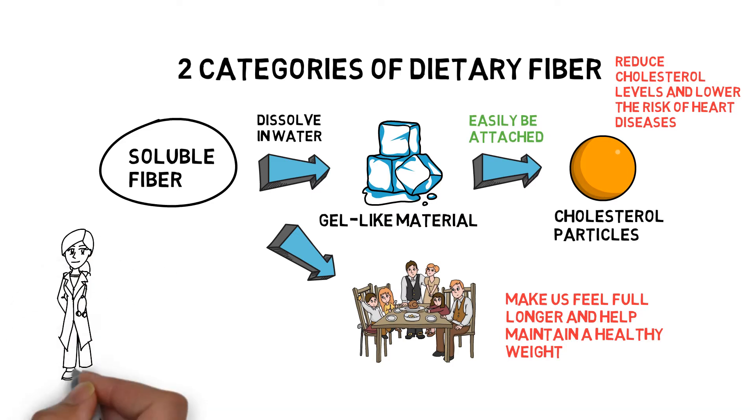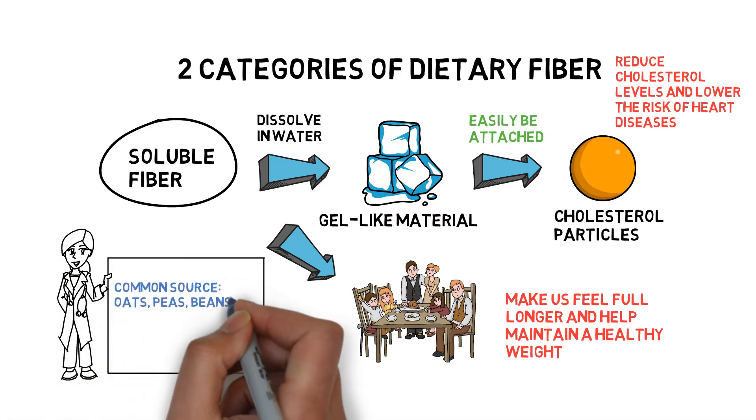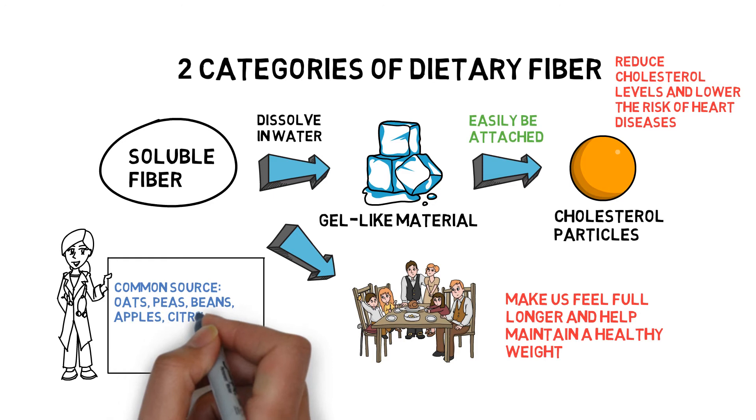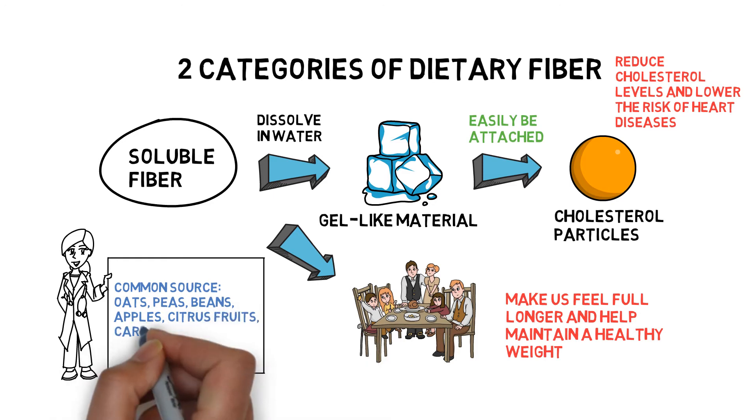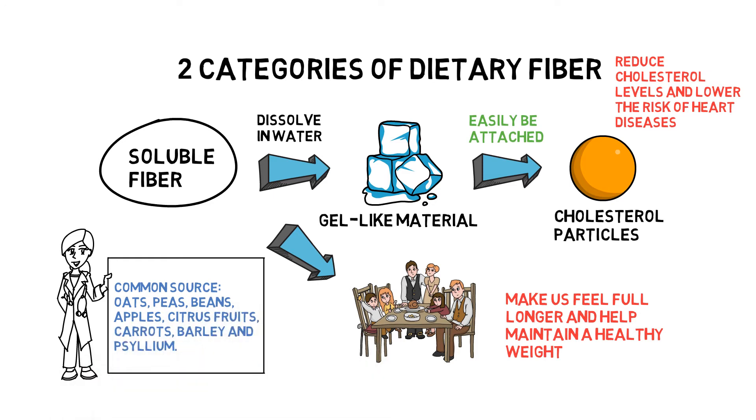The common sources of soluble dietary fiber are oats, peas, beans, apples, citrus fruits, carrots, barley, and psyllium.